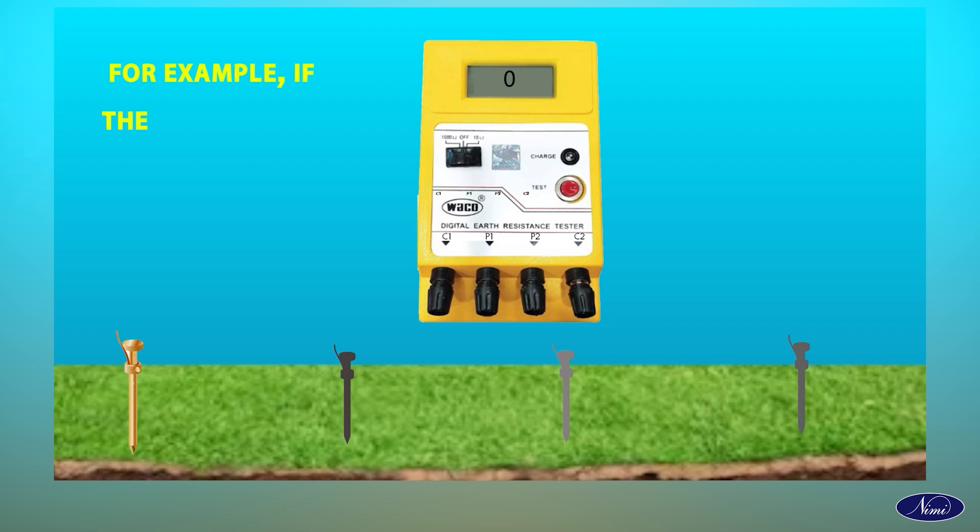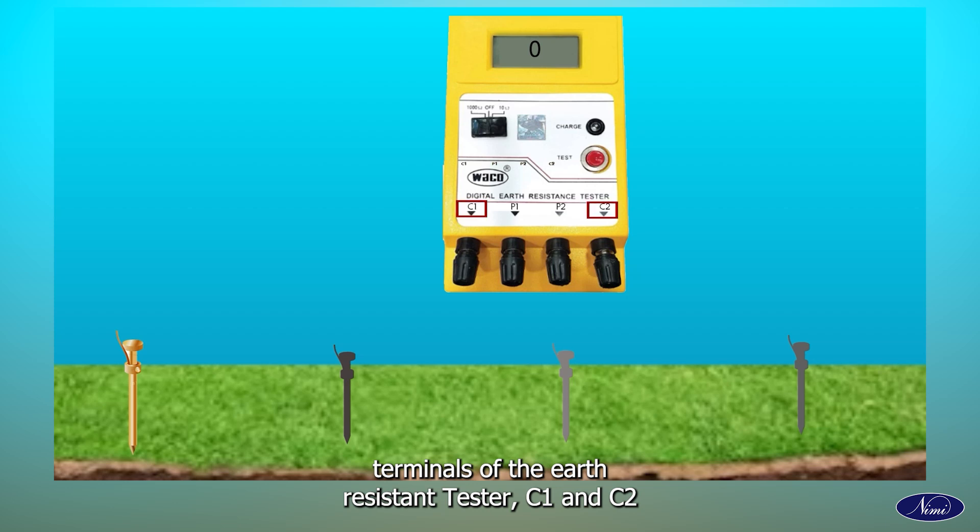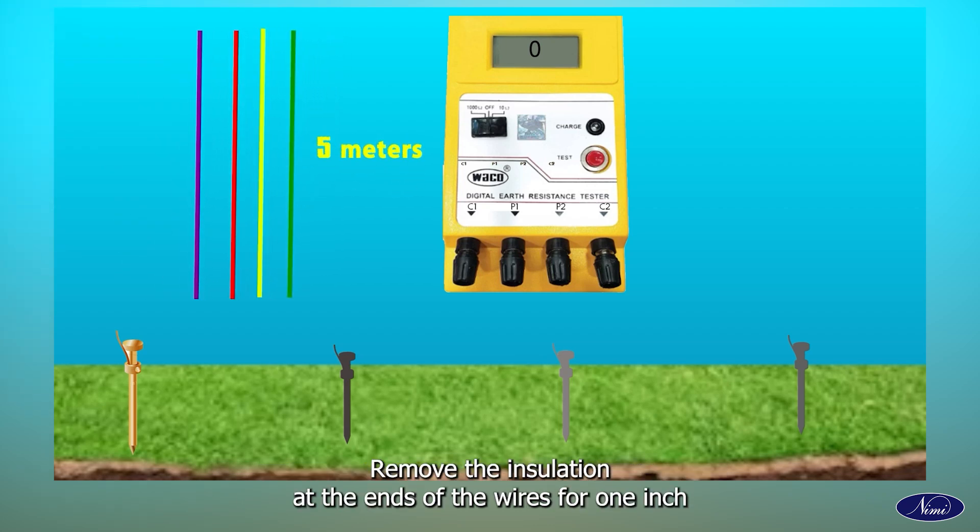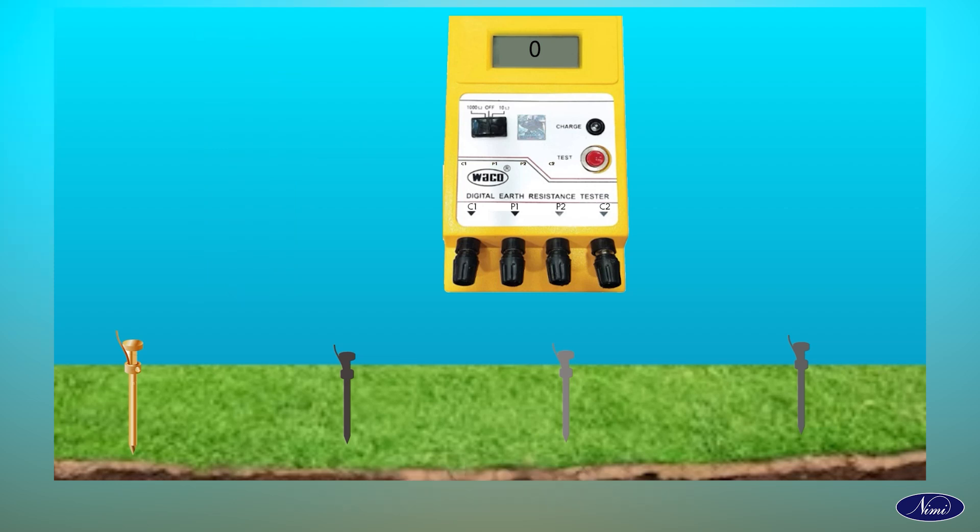For example, if the depth of each Earth electrode is 1 foot, then the distance between electrodes is greater than 20 feet. Mark the current terminals of the Earth-resistant tester as C1 and C2 and the potential terminals as P1 and P2. All four wires should have the same length of 5 meters each. Remove the insulation at the ends of the wires for 1 inch and connect all the four wires between the four terminals.